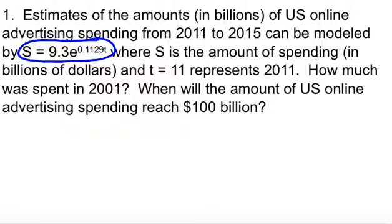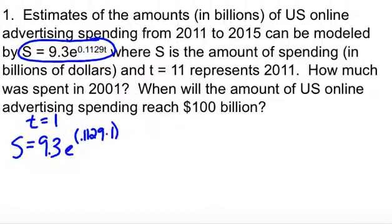S is the amount of spending in billions of dollars and T equals 11 is the year 2011. So we want to know how much was spent in 2001. Well, in 2001, T is equal to 1. So we're just going to plug that into our equation. So 9.3e to the 0.1129 times 1. You're going to plug that all into your calculator. And when you push those wonderful buttons, you end up with 10.4. Remember, we're talking about advertising spending. So $10.4 billion in 2001.